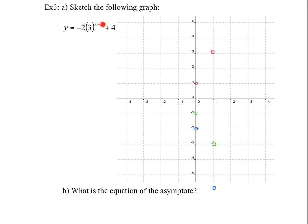Next, we do a translation 2 to the right for those points. Then the final graph moves up 4, so each point shifts up 4. Keep track of the horizontal asymptote: it starts at y equals 0, stays there after the flip, is unaffected by the stretch and the rightward shift, but moving up 4 changes it. So the horizontal asymptote is now at y equals 4.